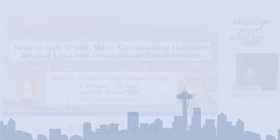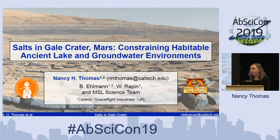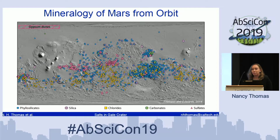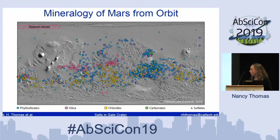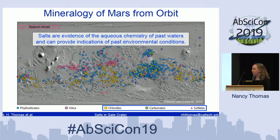Today I'm going to be talking about my PhD thesis work, transitioning from talking about brines in the last few talks to now moving on to salts — specifically salts in Gale Crater measured by the MSL Curiosity rover. From orbit, aqueous minerals have been mapped extensively on Mars. Salts are found in a scattered distribution but provide important clues to the aqueous chemistry of past waters and potential transitions in environmental conditions, such as a global shift to a more arid climate on Mars.